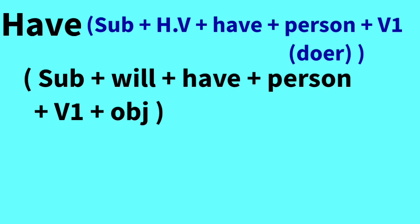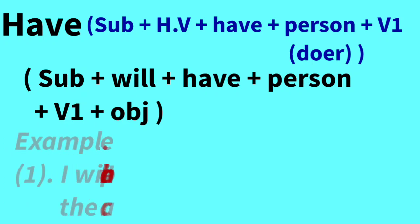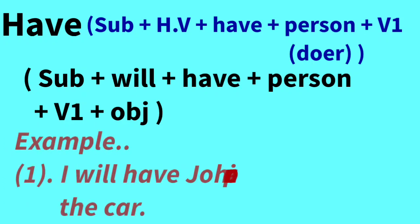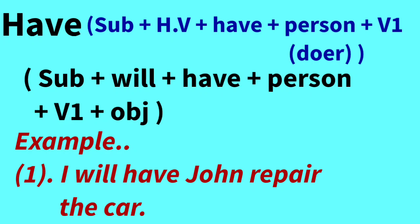For the will-related future structure — Subject + Will + Have + Person/Doer + First Form of Verb — our first example is: 'I will have John repair the car.' Here, 'I' is the subject, 'will' follows, then 'have,' then John as the person or doer, and 'repair the car' is the first form of the verb. The meaning is: I will get the car repaired by John — the responsibility is on John.